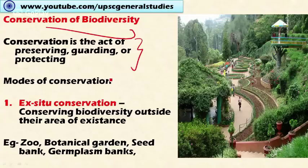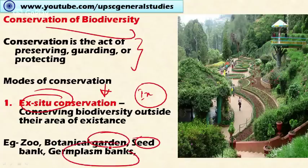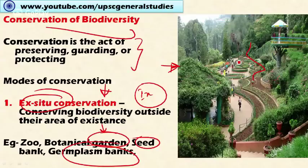There are two important modes of conservation of biological diversity: ex-situ conservation and in-situ conservation. In ex-situ conservation, biodiversity is conserved outside their natural habitat. Examples include zoological gardens, botanical gardens, seed banks, and germplasm banks. In the botanical garden, various species of plants like trees, shrubs, herbs, and climbers are planted in a specified area for conservation and educational purposes — outside the natural habitat, outside the forest, in a different setting.